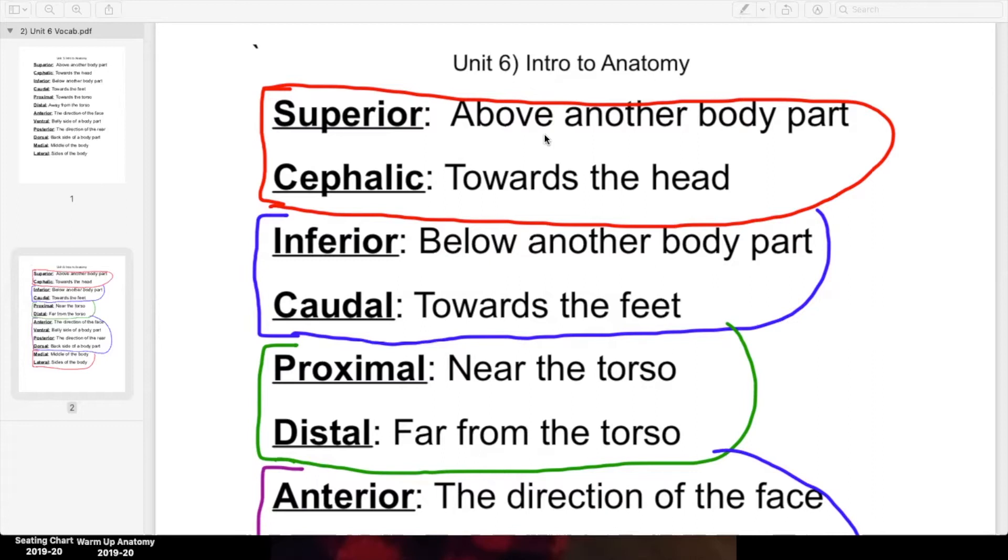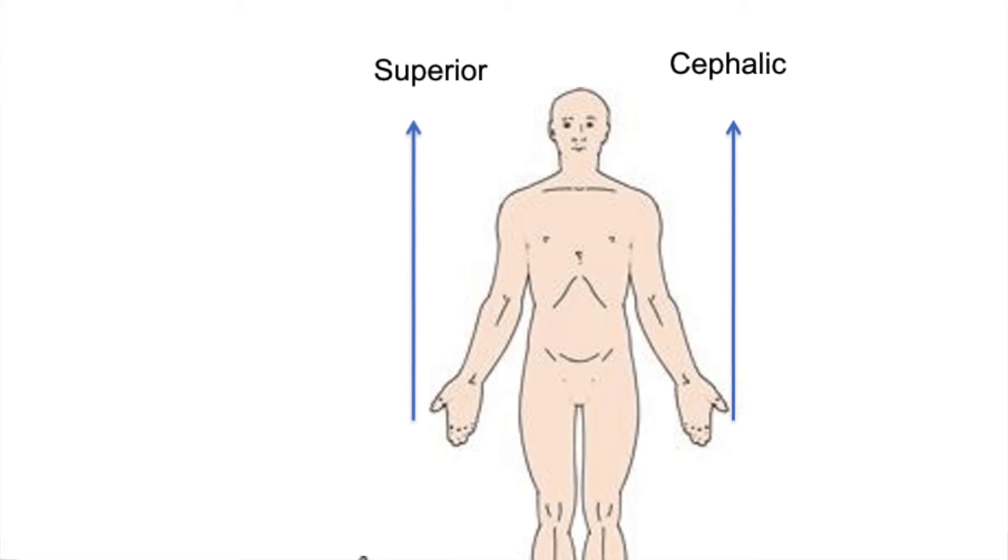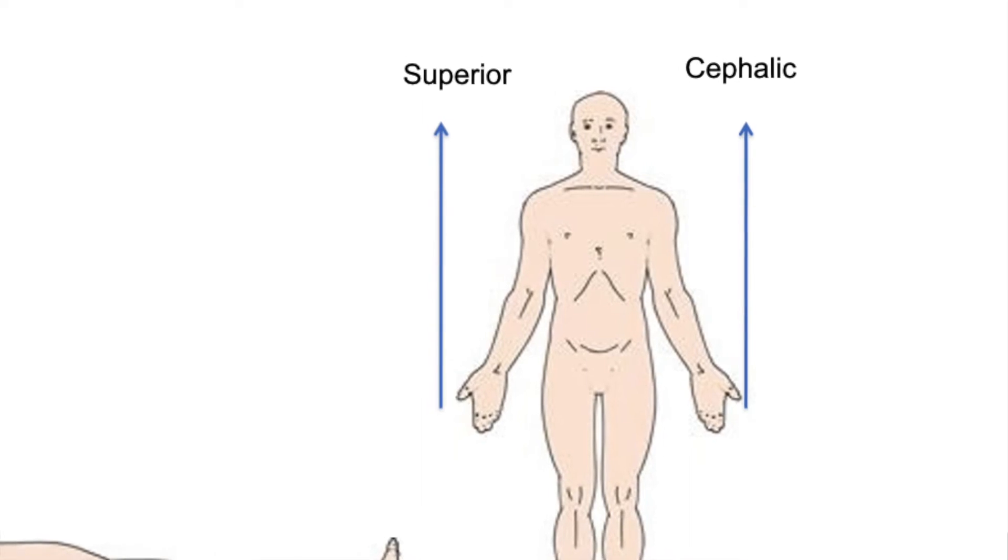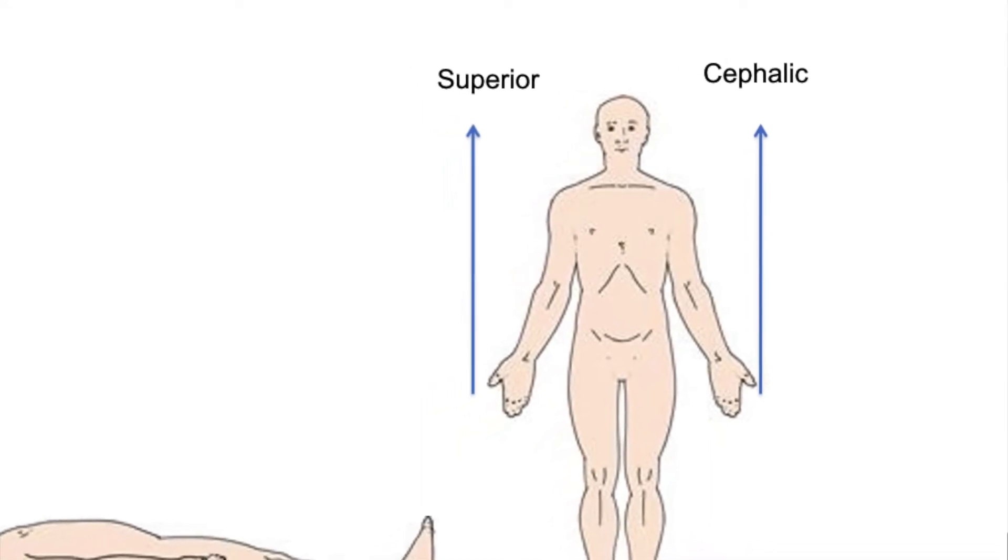Your shoulders are above your elbows typically, right? If you keep your arms hanging down, your upper limbs hanging down, then your shoulders would be above your elbows. We would say superior to your elbows, or your chest muscles are superior to your belly button. Cephalic would be the exact same thing typically. Your chest muscles are cephalic to your belly button, meaning they are closer to your head than your belly button. So why do we have two words that have the same definition?